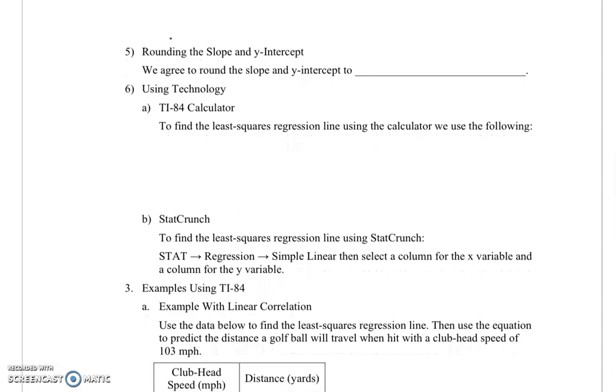We have two more properties. We'll talk about how to use technology to find the least squares regression line in the next video. When we round the slope and the y-intercept, we agree to do that to four decimal places. Now, that is said with a warning. Sometimes Pearson changes it and wants six decimal places or something else. So make sure you pay attention when you're doing your homework in MyLabsPlus, so you don't miss the answer just because you rounded to the wrong number of decimal places.